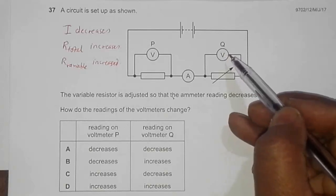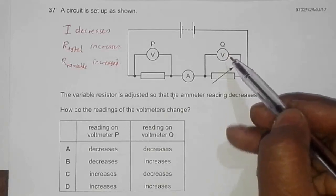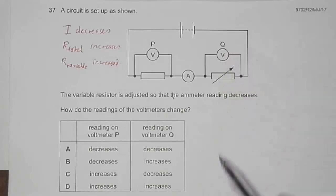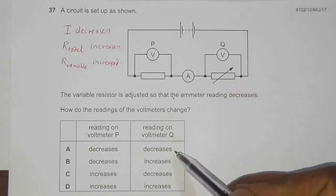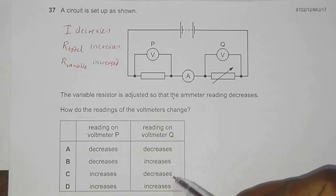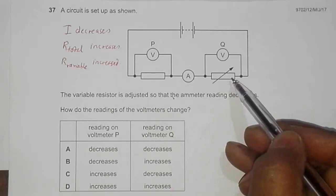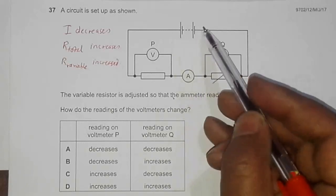That means the reading on voltmeter Q should increase. So choice B or D. Now if this increases, according to the voltage divider formula, the EMF is now consumed by these two resistors.